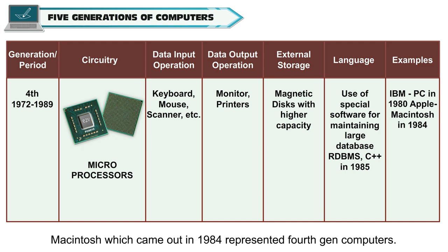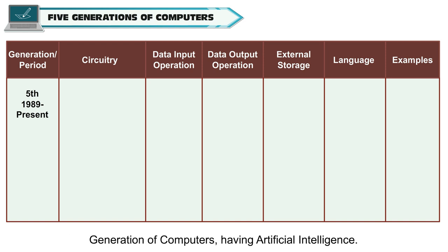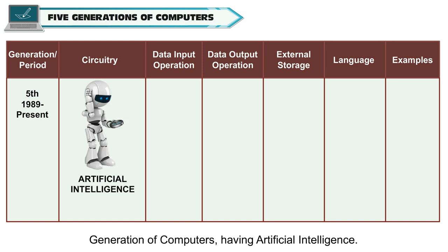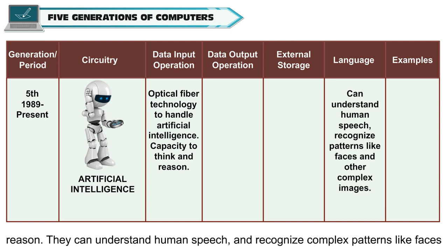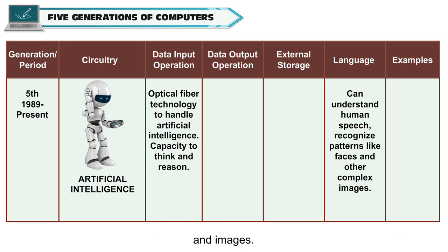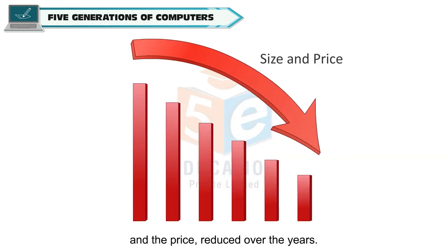The IBM PC in 1980 and the Apple Macintosh, which came out in 1984, represented 4th generation computers. The period after 1989 to the present is considered to be the advent of the 5th generation of computers having artificial intelligence. These computers use optical fiber technology to enable AI and are able to think and reason. They can understand human speech and recognize complex patterns like faces and images. Through this evolution, we note that the speed of computers increased, while the size and the price reduced over the years.